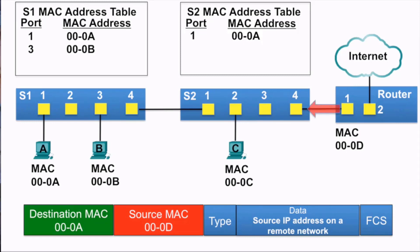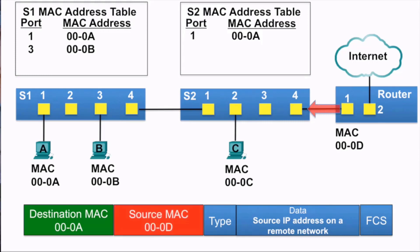The frame is sent to switch S2. S2 receives it and examines the source MAC address, which is not in its MAC address table, so it adds it. It then examines the destination MAC address, which is in its MAC address table, so it forwards it out port 1.